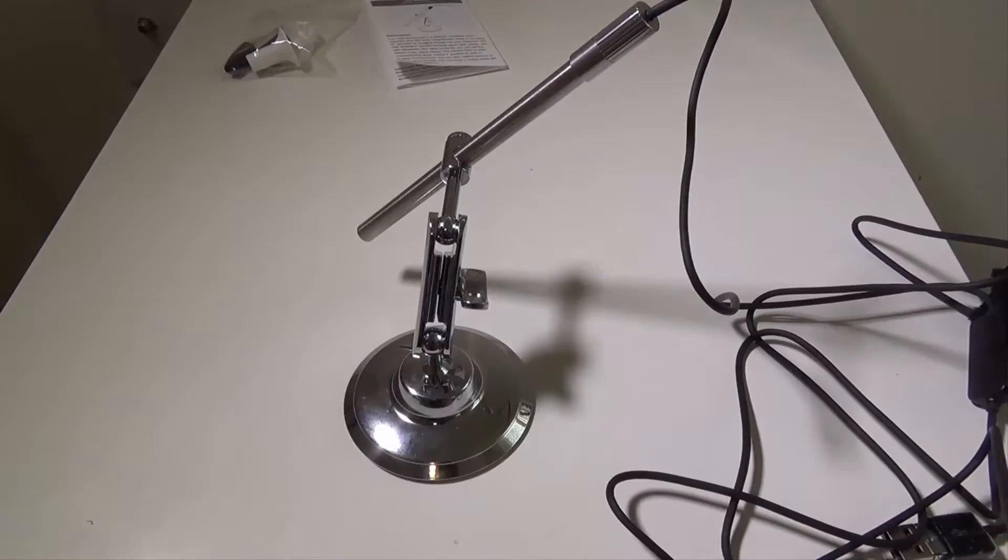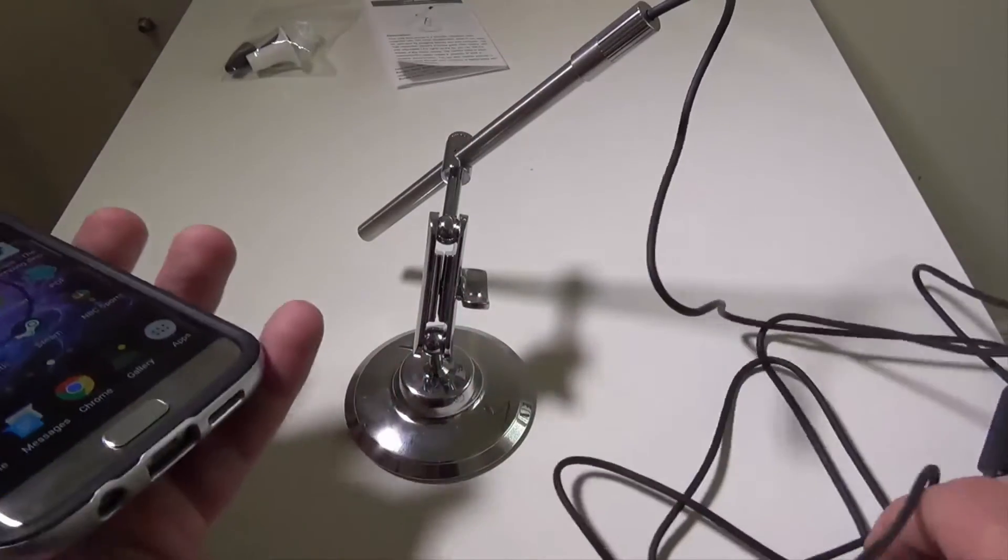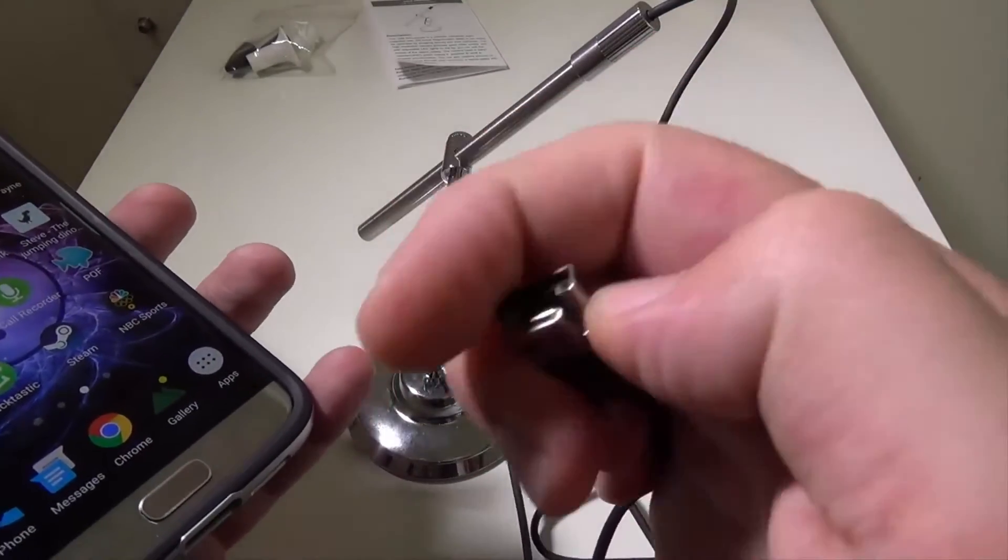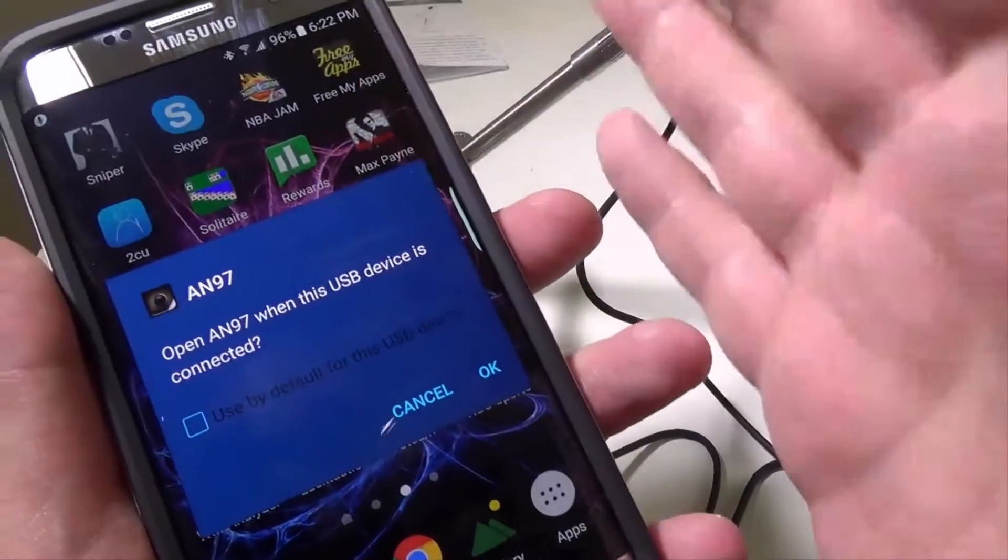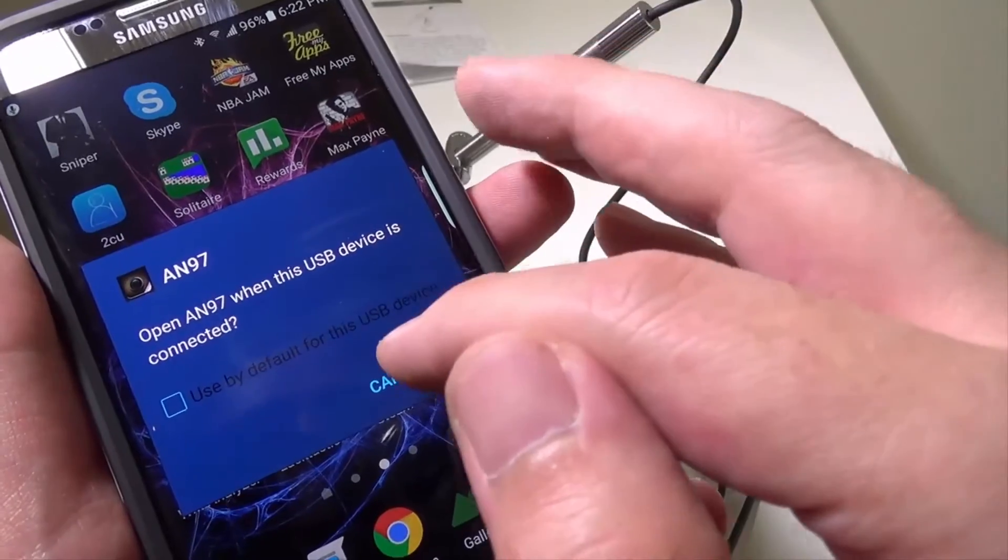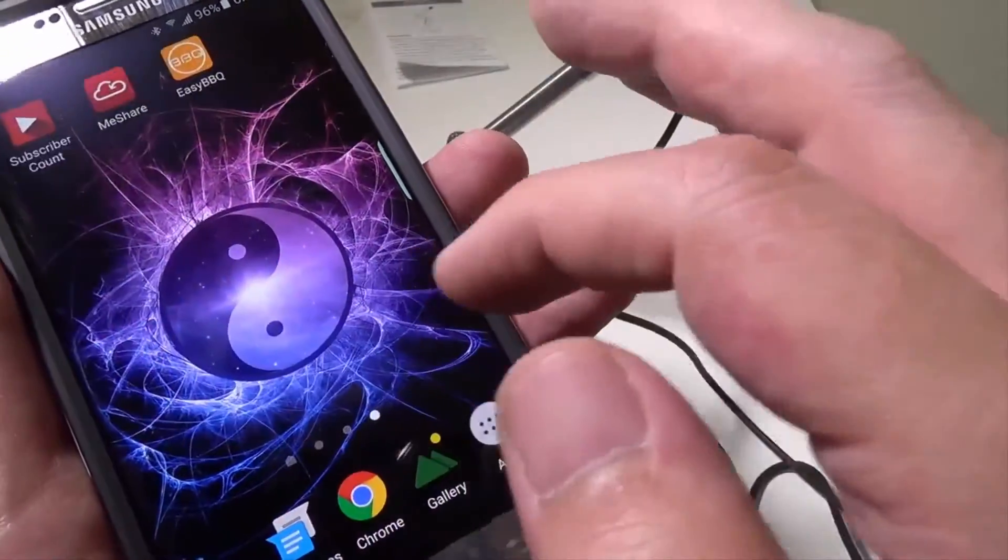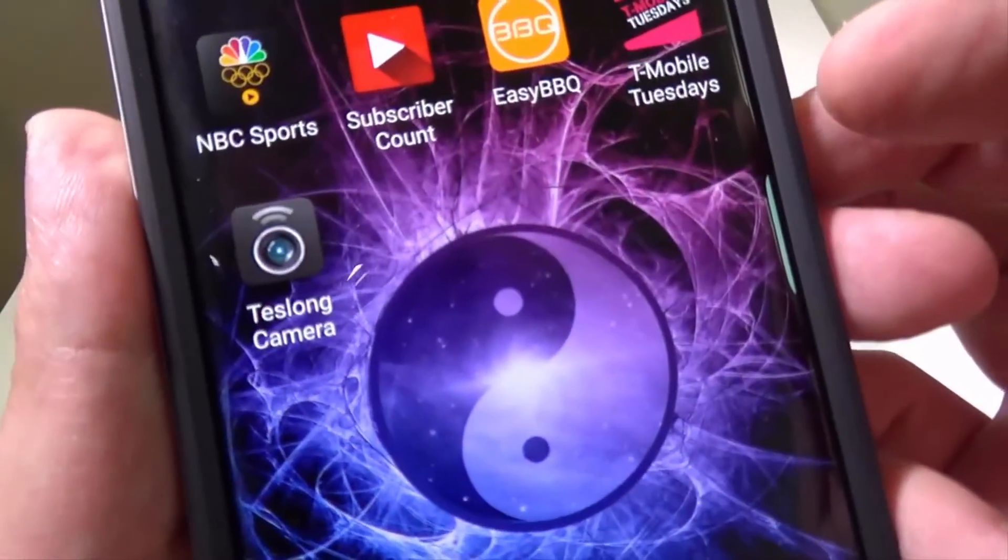Now if we want to hook this up to our phone, very simple, you just flip this guy down and then you hook it up to your phone. It's going to ask me if I want to launch ANC because I have another one for another endoscope that I did. I'm going to cancel it.